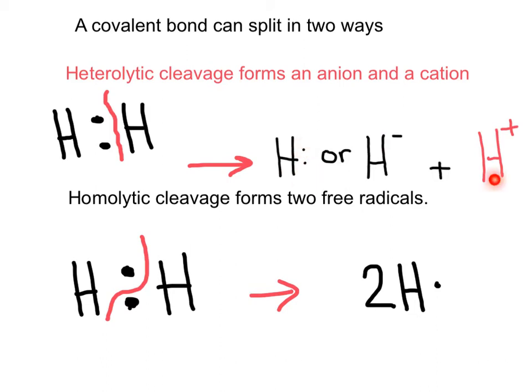And when we have homolytic cleavage, we can cleave the bond evenly, and each one of the hydrogens is taking one electron, forming two free radicals.